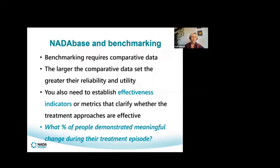How what we have now can help individual organisations think about how they're tracking in relation to their own data. Benchmarking requires comparative data — a data set you can compare your data to, and the larger that data set, the greater its reliability and utility. The other key thing is establishing effectiveness indicators or metrics that tell us whether treatment approaches are effective. For example, a NADA member might say, 'I'd just like to know what percent of people demonstrated meaningful change during their treatment episode. How do I work that out?'